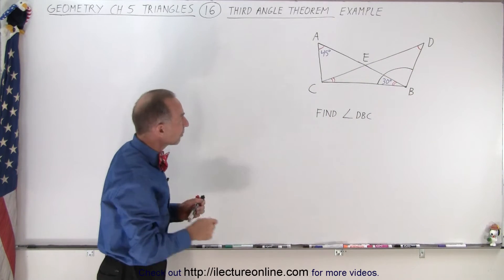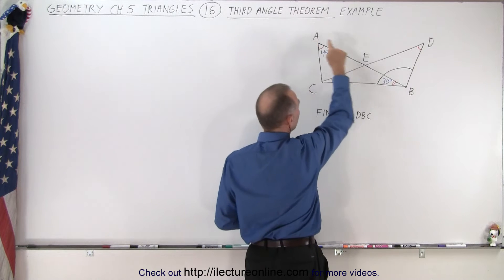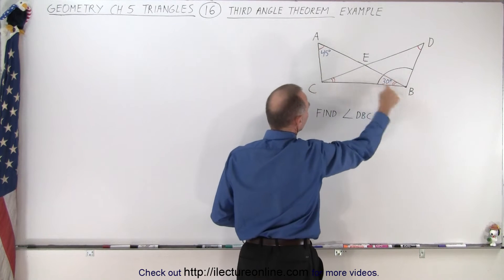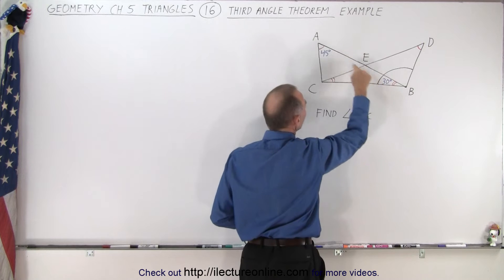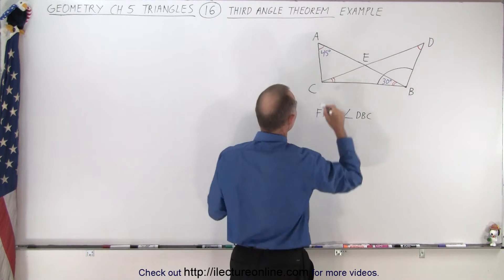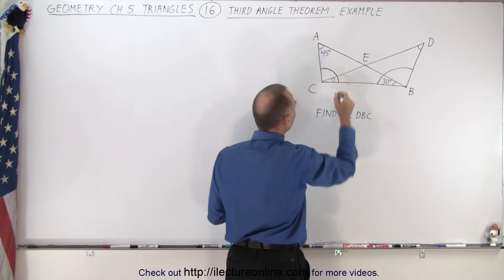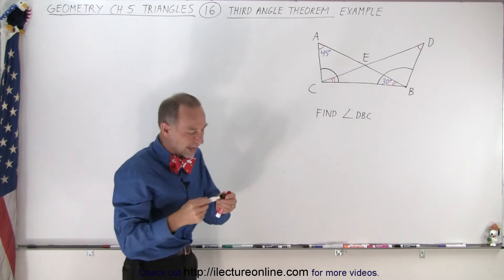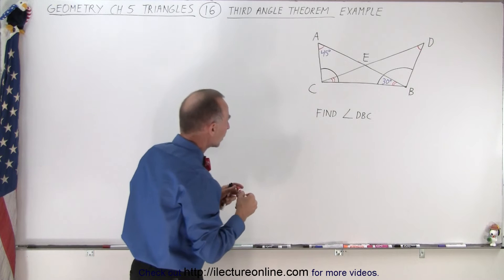First, let's look at this triangle that goes from A to B to C. Notice we're given two of the three angles, so we can figure out the third angle. We know that the sum of the angles of a triangle adds up to 180 degrees.